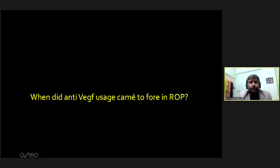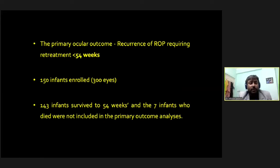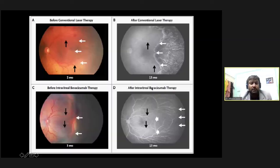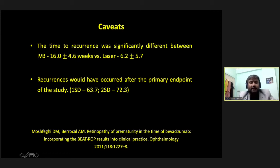The BEAT-ROP trial was the landmark study that gave us confidence in using anti-VEGF. It included 150 infants and the primary outcome was recurrence of ROP requiring retreatment. Results favored bevacizumab, with significant treatment success in zone one disease but not for posterior zone two. In conclusion, bevacizumab showed superior effect compared to conventional laser for zone one stage three plus, but not for zone two. The caveats — that recurrences occurred after the primary endpoint — are often not discussed, and laser requires a longer follow-up protocol.